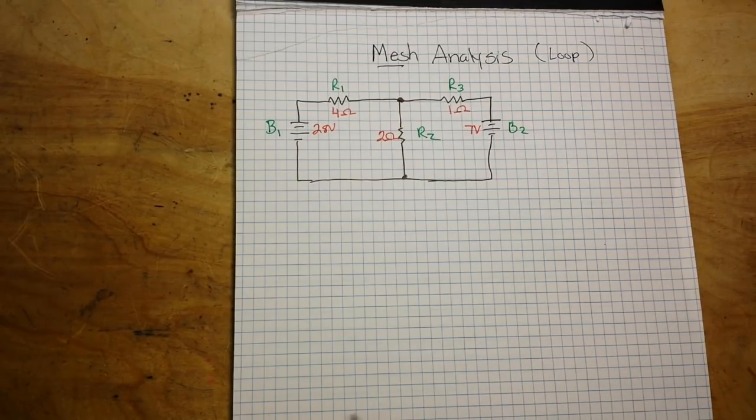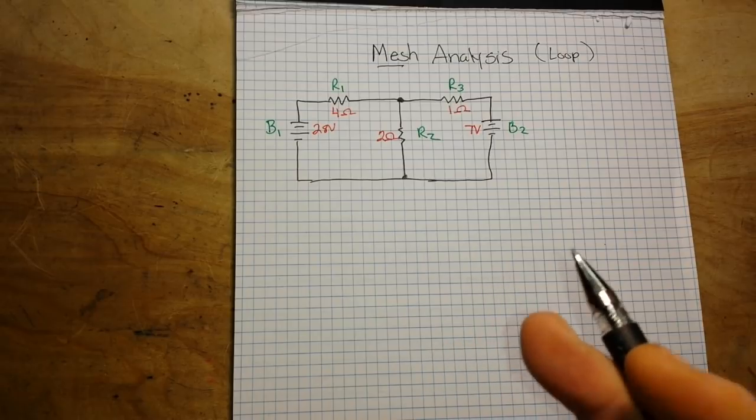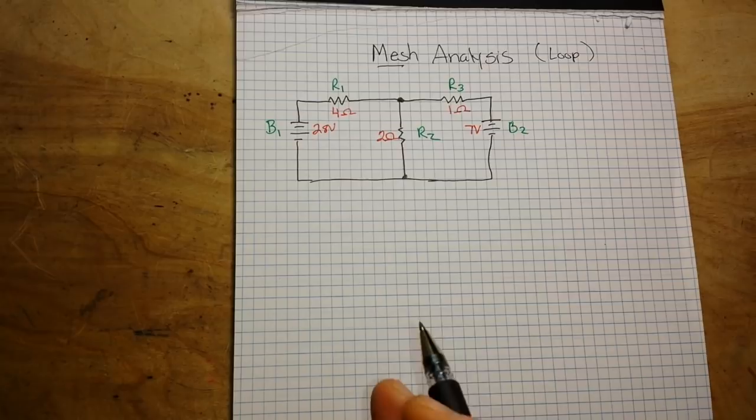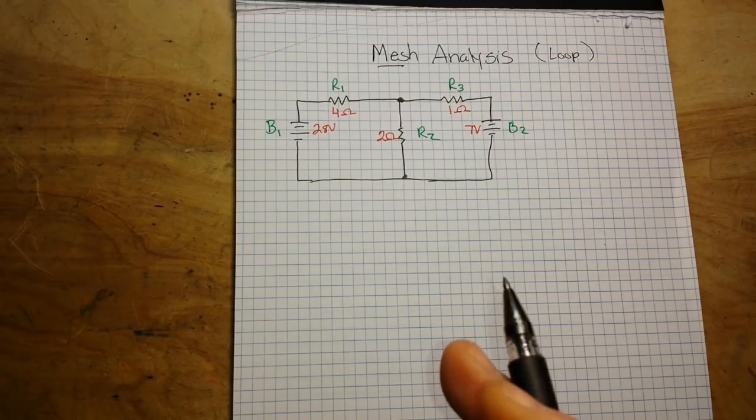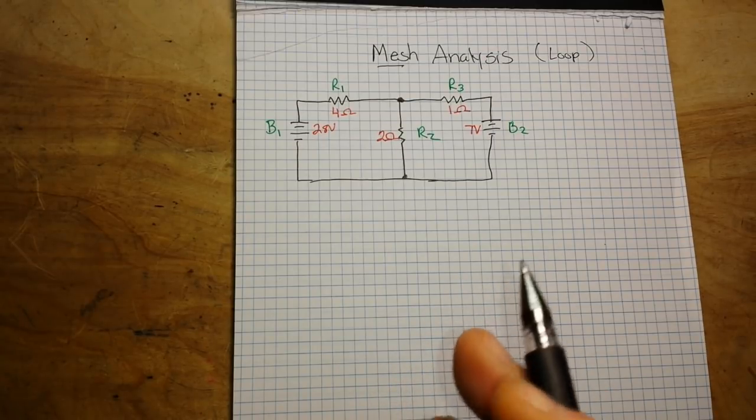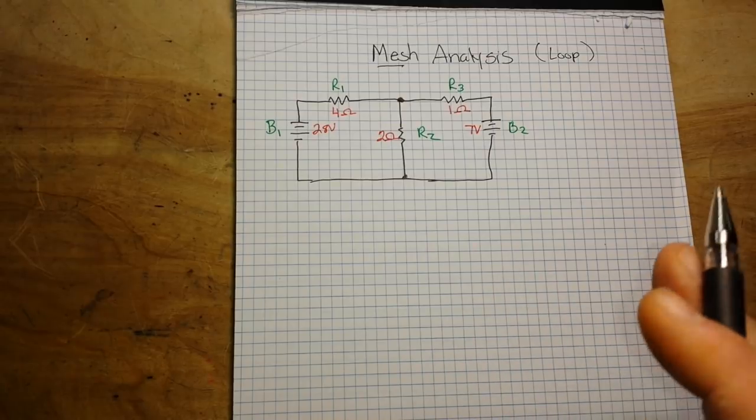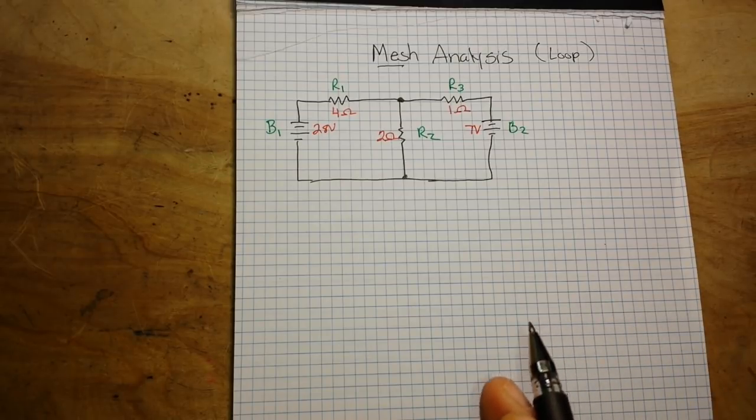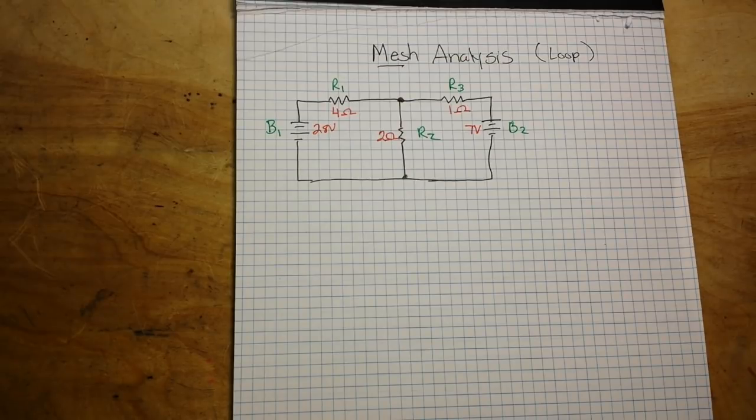But we talked last week about another type, the nodal analysis, and these are somewhat similar in that they use simultaneous equations such as Kirchhoff's voltage law and Ohm's law. But where they differ is mesh analysis does not use Kirchhoff's current law. So not using that gives us a different way to look at things and we can solve some circuits that have less unknown variables and using less simultaneous equations. So let's get on with it.